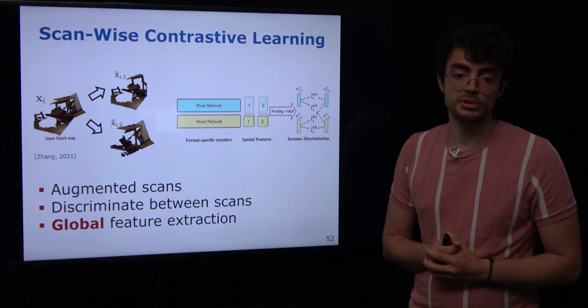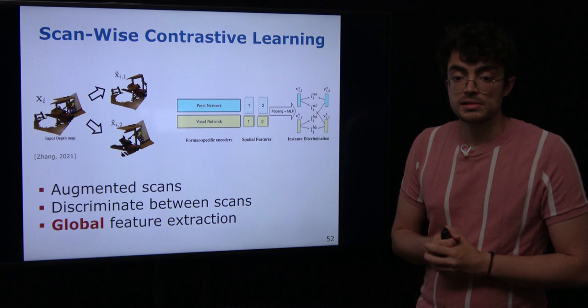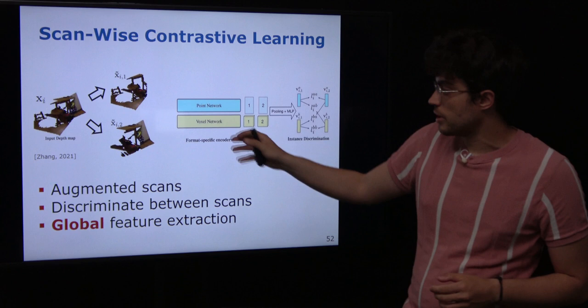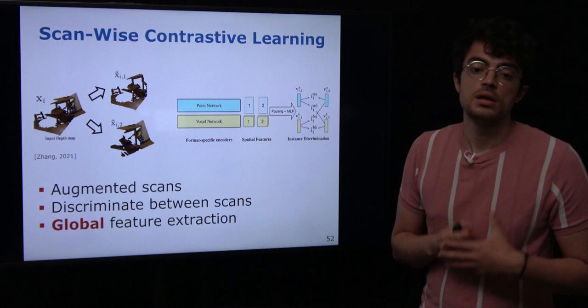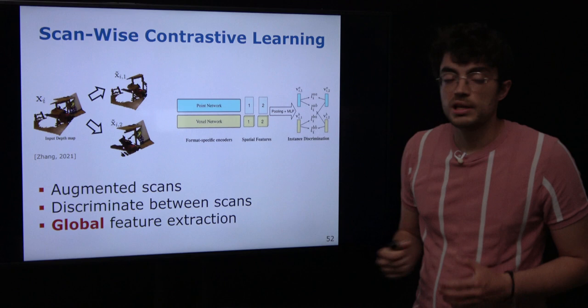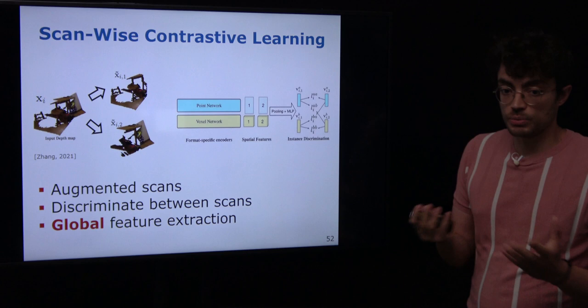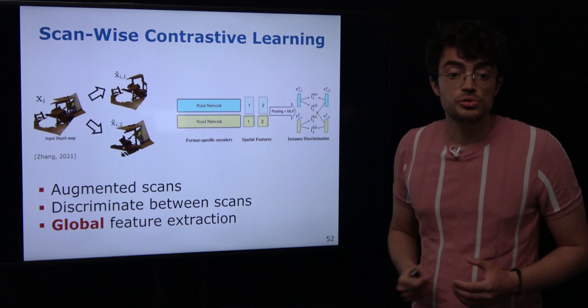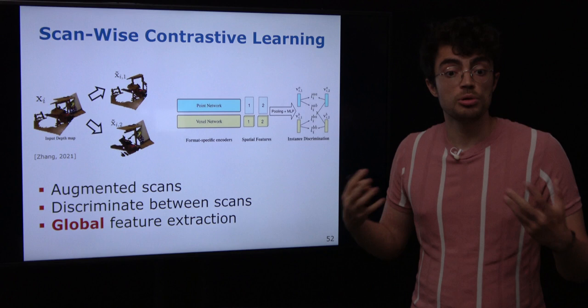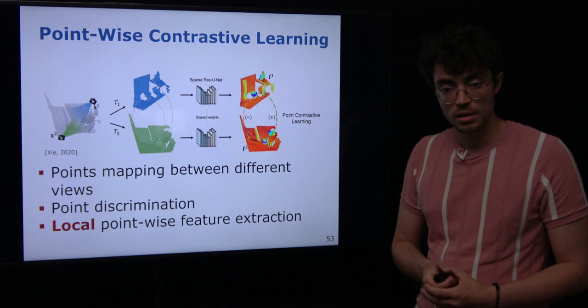With this data augmentation, we can apply contrastive learning at scene scale over LiDAR scans. One possibility, similar to the image domain, is to generate two random views of the same scene, extract a feature representation for each, and use these as positive pairs with the contrastive loss to maximize similarity between the two views. By training like this, we achieve a global feature representation, because the pretext task requires the network to extract global scene features to match the representations of both views together.